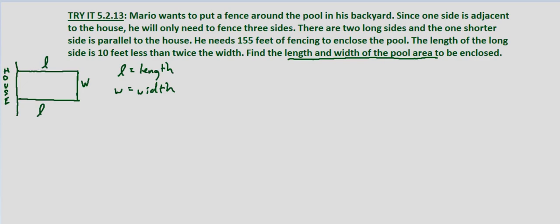And we know that the sum of these three sides, the lengths of these three sides is 155. So our first equation is 2L plus W equals 155.